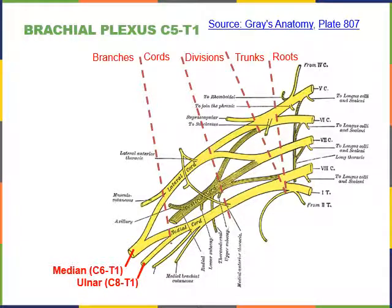The median nerve arises from spinal nerve trunks C6 through T1, connecting to both the lateral and medial cords. It travels down the anterior of the arm and forearm along the midline, just lateral to the ulnar nerve. The median nerve excites most flexors of the wrist and digits, including flexor carpi radialis and flexor digitorum superficialis.